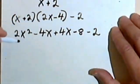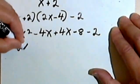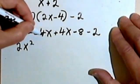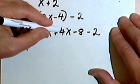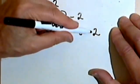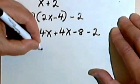Now I'm going to combine like terms. I'll have 2x squared, negative 4x, positive 4x. They cancel. Then I've got negative 8 minus 2 is negative 10.